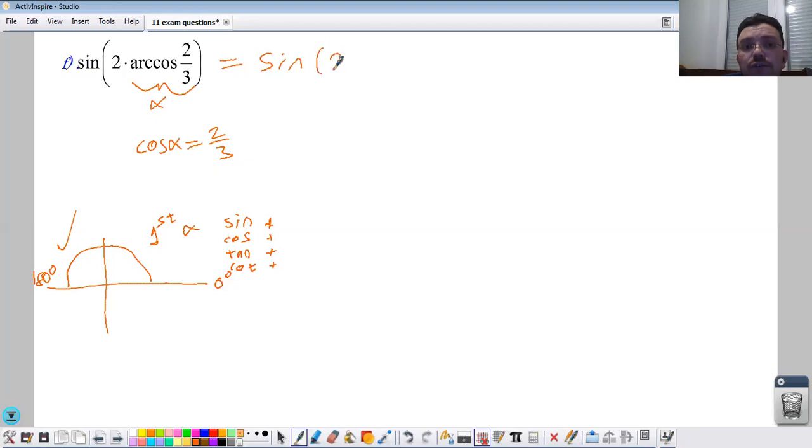You replace alpha for arccos 2/3, so you need to know the formula for sine 2α, which is 2 times sine alpha times cosine alpha. To be able to move on, I need to replace the numbers. Sine alpha we don't know, but cosine alpha we can replace with 2/3.